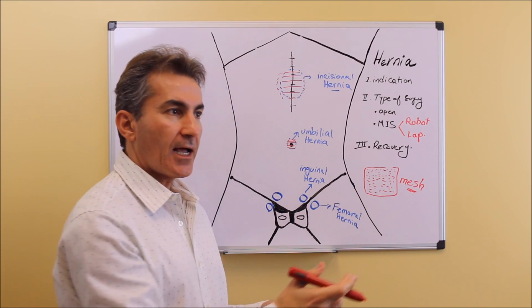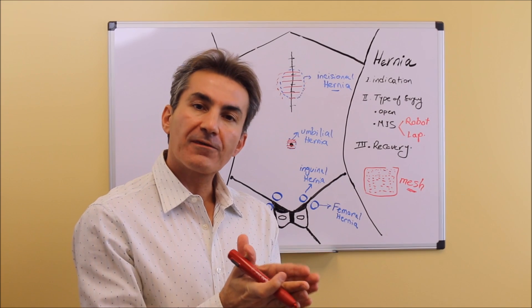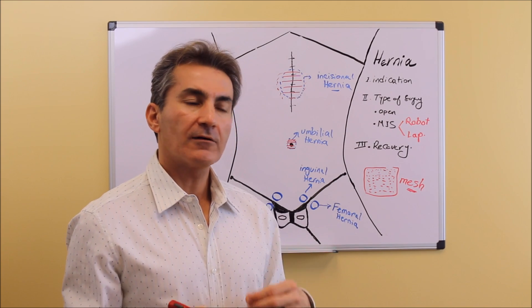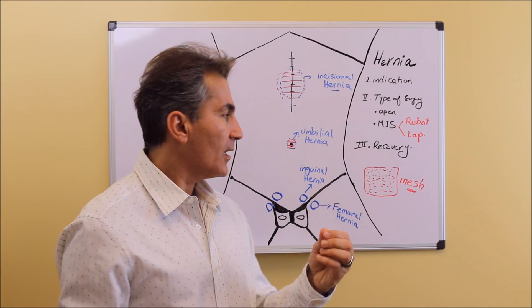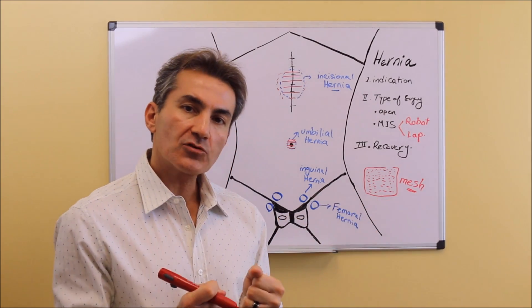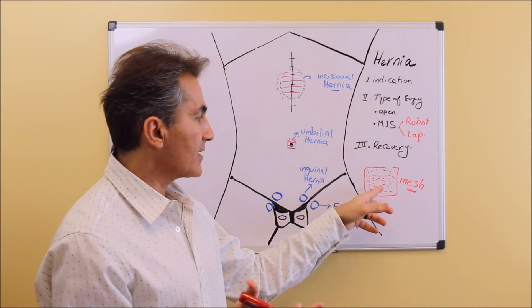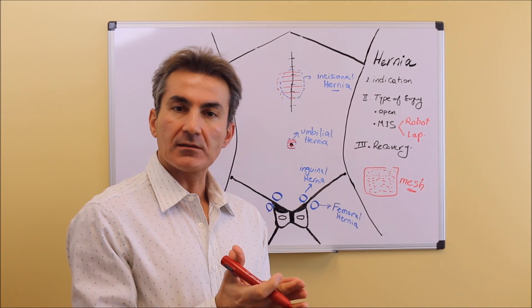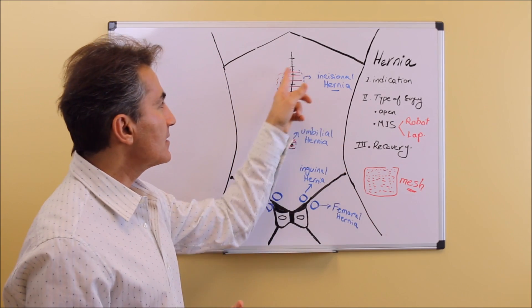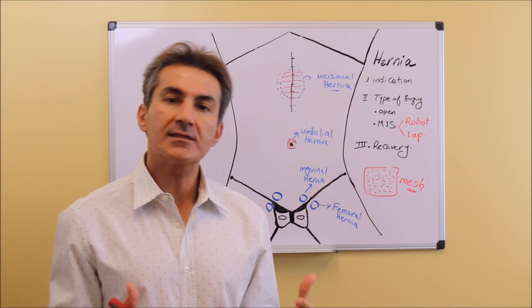That scar tissue grows into these little holes of the mesh as a foundation to develop a very thick tissue. That process of tissue formation takes around six weeks and makes a very strong tissue. Your scar tissue incorporates that mesh into your muscle and makes the weak muscles stronger.